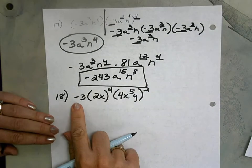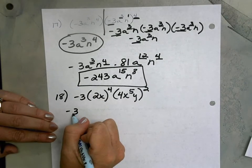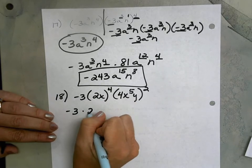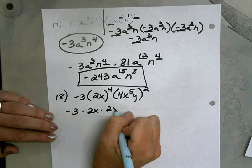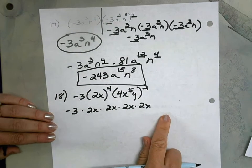So again, I'm going to look at this as three separate problems. And if you want, you can even write it out. I have negative 3 times 2x to the fourth. So 2x times 2x times 2x times 2x. That's 2x to the fourth.